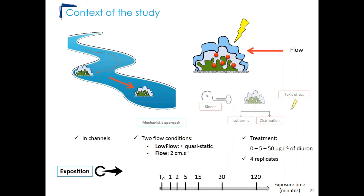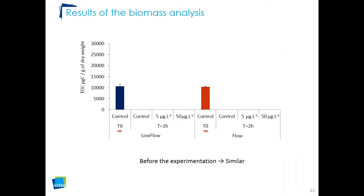Biofilms were exposed in channels under two different flow conditions: a low flow condition at 2 cm/s and a high flow condition at a higher flow velocity. The biofilm was exposed to 0, 5, and 50 micrograms per liter of diuron. Samples were collected at T0 (before the experiment) and then after 1, 2, 5, 15, 30 minutes, and 2 hours of exposure.